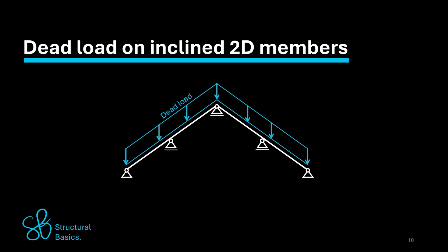So when we transfer the area load into a line load, the line load can be applied to the rafter with the same direction and distribution.